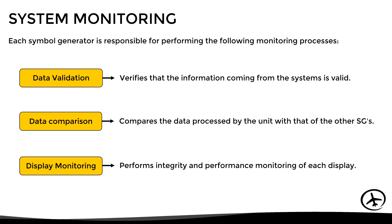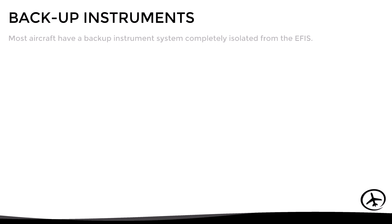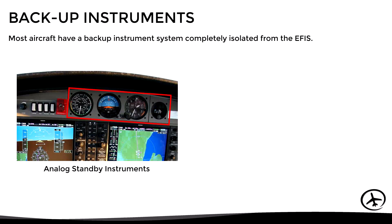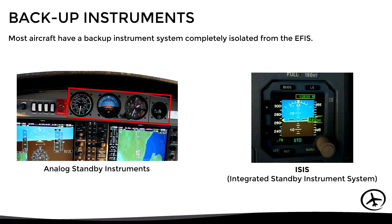You might be wondering what happens in case of a total system failure. Most aircraft have a backup instrument system completely independent of the EFIS. These standby instruments can be either analog, as seen in one example, or digital, as seen in another.